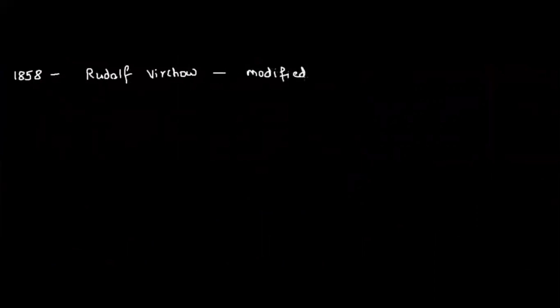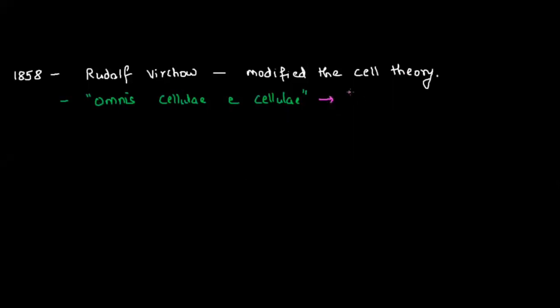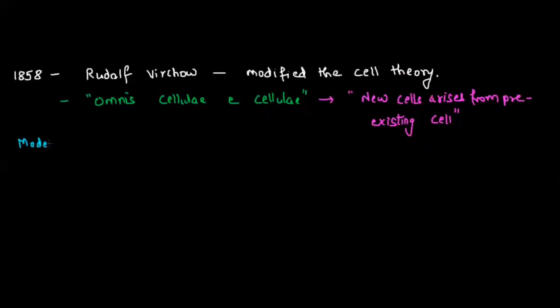A question arose: how do new cells come into picture? In 1858, scientist Rudolf Virchow modified the cell theory. He stated that new cells arise from pre-existing cells. In Latin, he expressed this as 'omni cellulae e cellulae,' meaning new cells will always arise from pre-existing cells — just as we came from our father and mother, and they from theirs.